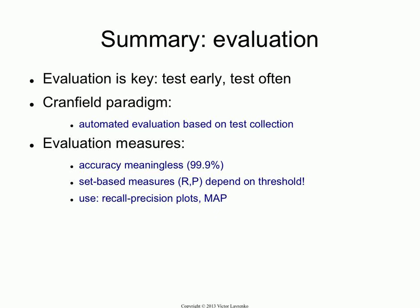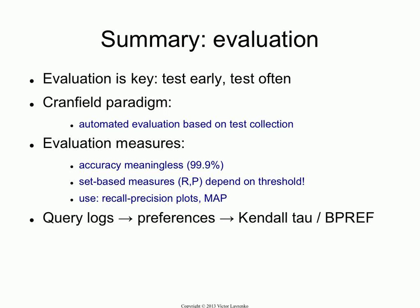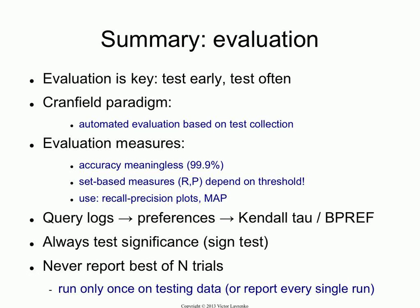If you use set-based measures like recall, precision, or F1, keep in mind they depend on a threshold setting — if the threshold is unconstrained, reporting a recall-precision pair is meaningless. In general, you want to use rank-based metrics like mean average precision, NDCG, or recall-precision plots. If you have query logs without relevance judgments, use things like Kendall's tau and BPREF. You should always do significance testing and always split the data properly.